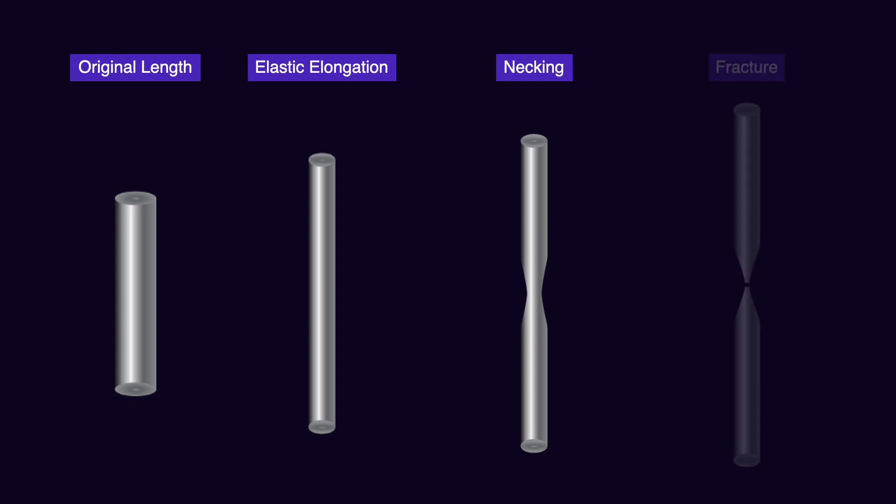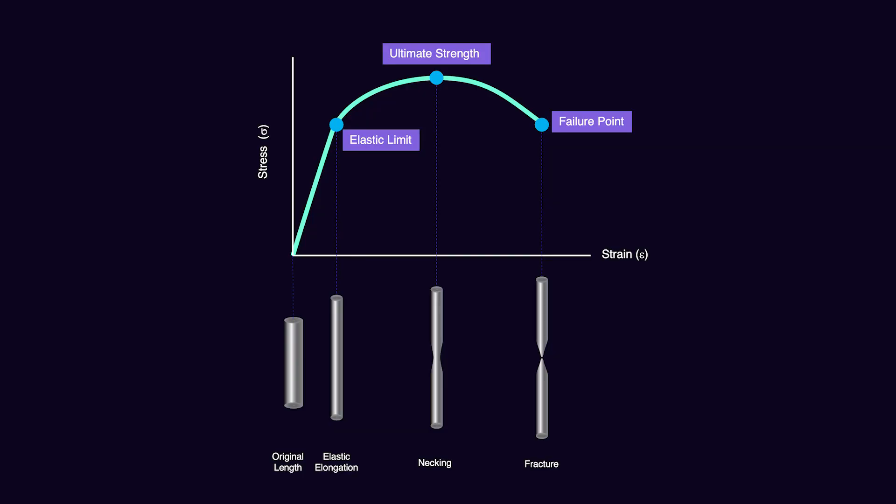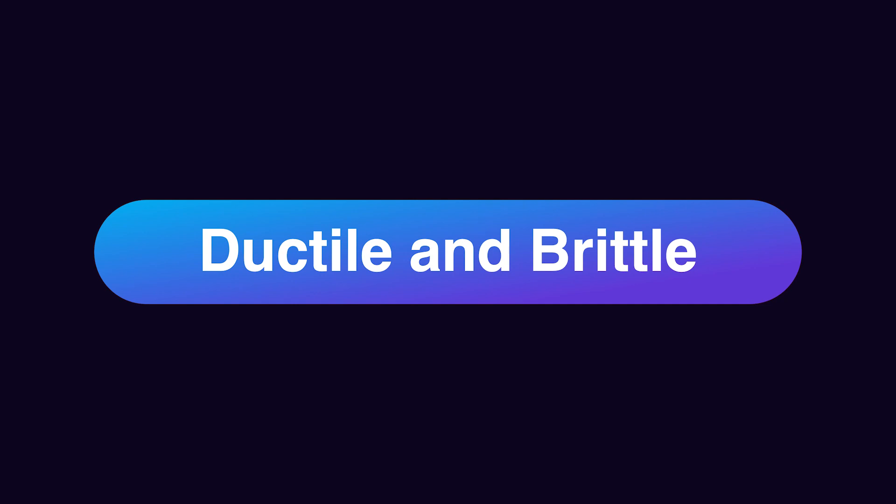Now it takes much less force to break the material. So necking defines the point when the ultimate strength has been reached and the material starts to change its structure. The other terminology I'd like you to be familiar with is ductile and brittle.